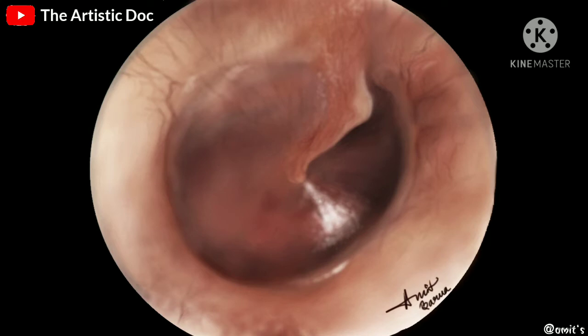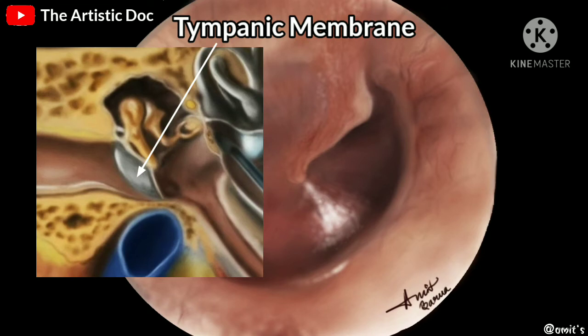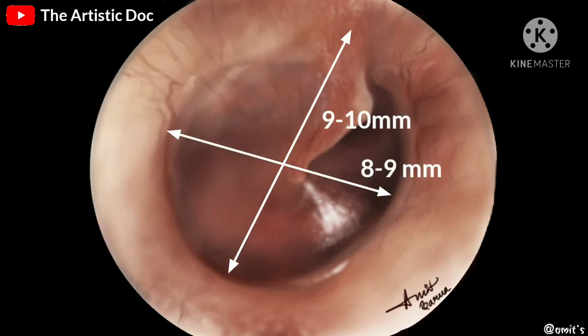Now coming to the academic portion: the tympanic membrane forms the partition between the external acoustic canal and the middle ear. It is set obliquely. It is almost 9 to 10 millimeters tall, 8 to 9 millimeters wide, and 0.1 millimeters thick.